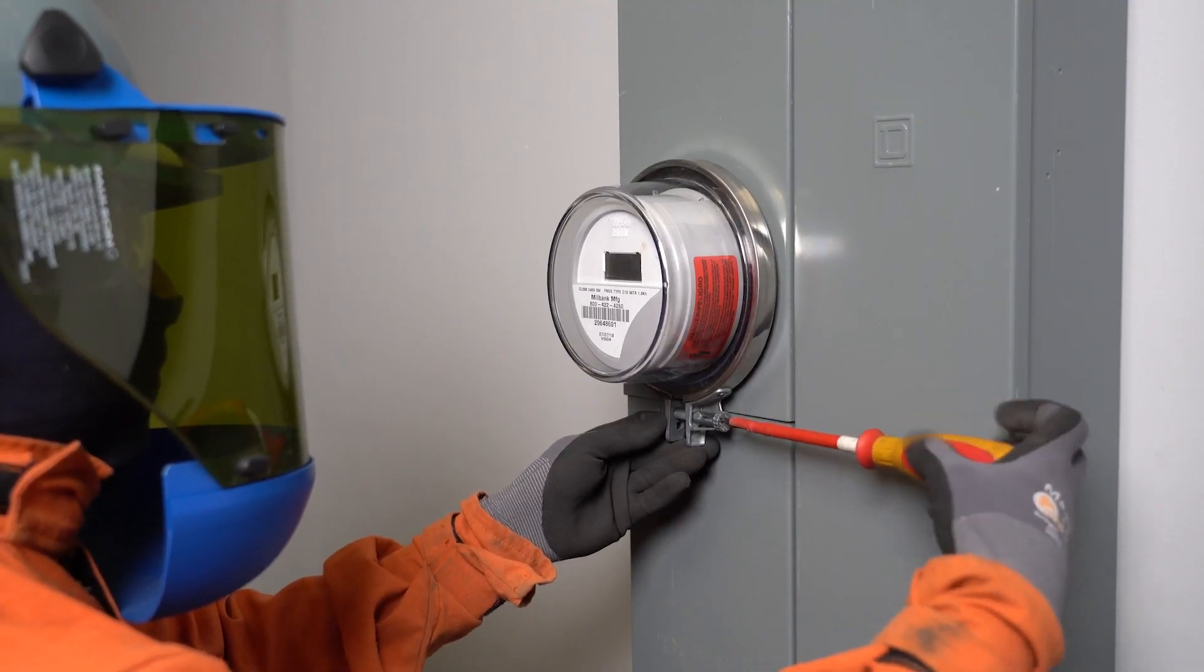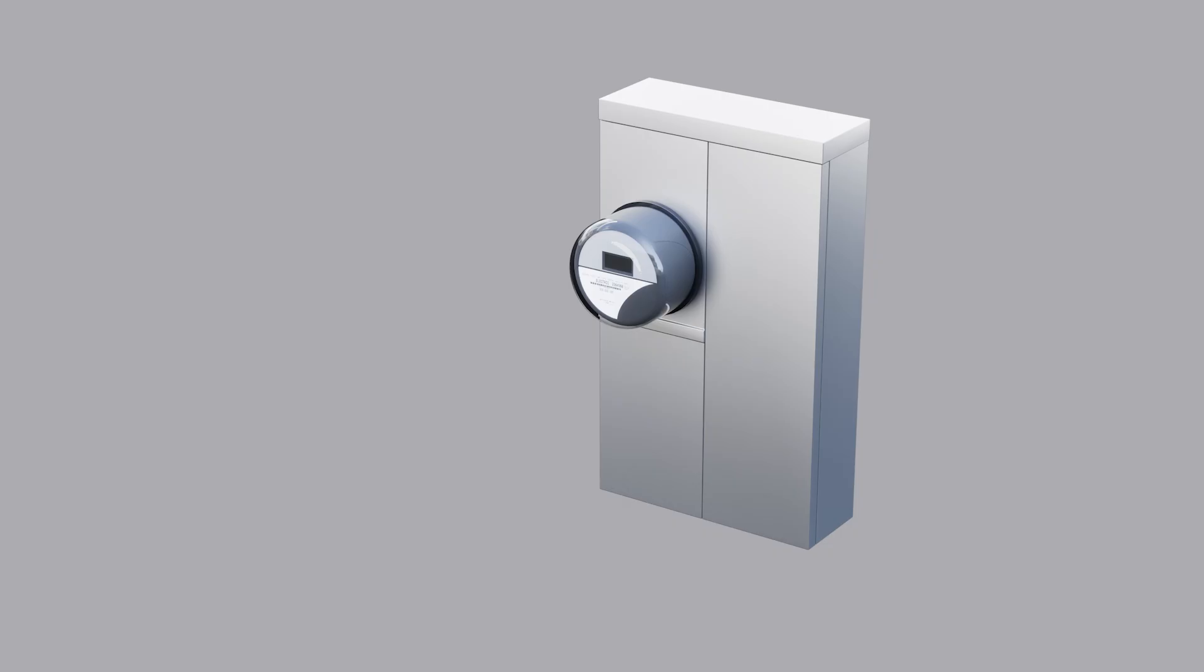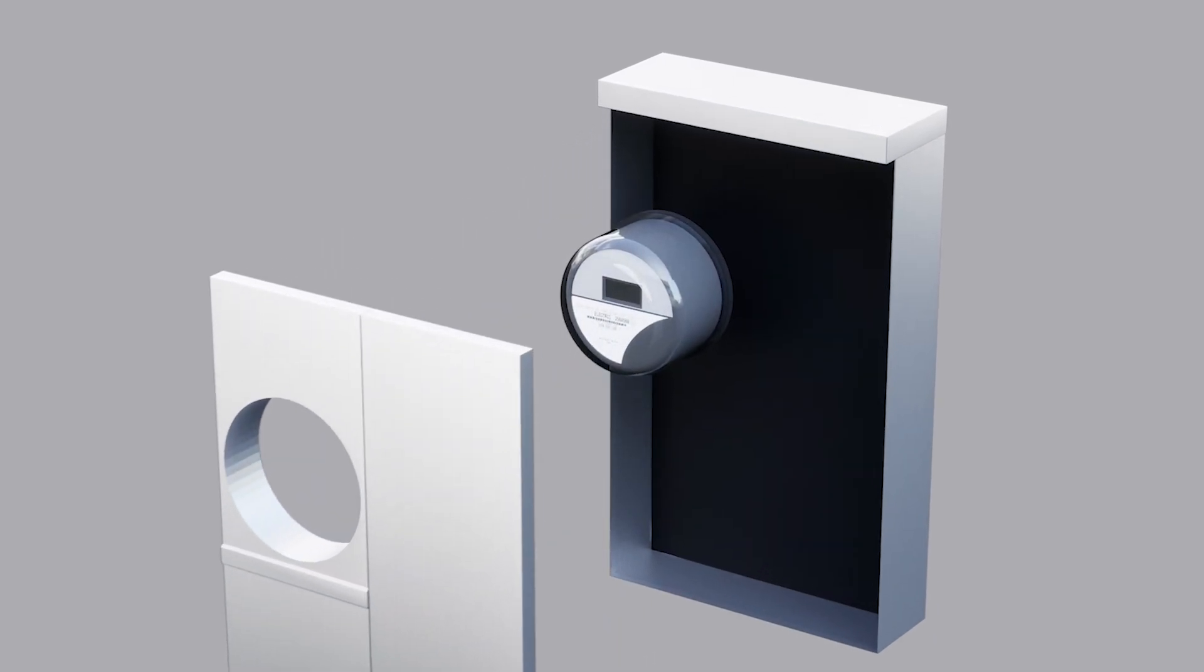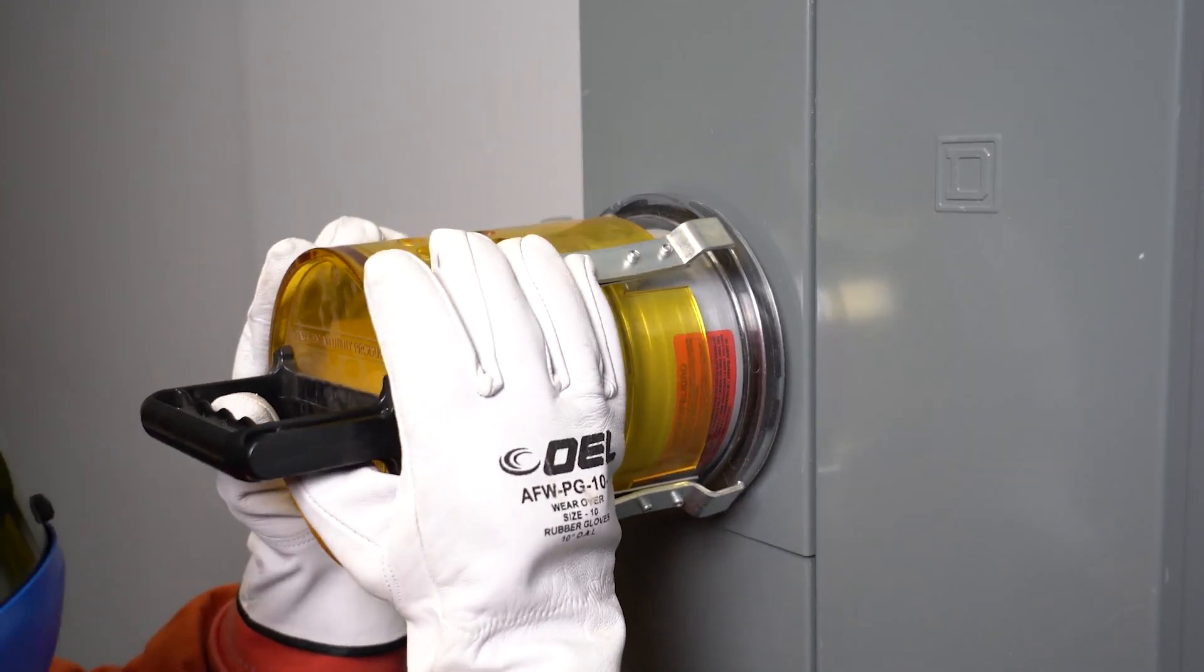For ring type meter sockets, remove the ceiling ring while wearing cut-resistant gloves. For ringless meter sockets, remove the meter socket enclosure cover. Next, remove the meter from the base.